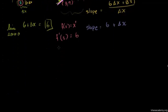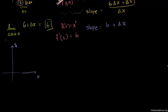So let me redraw my function here — never hurts to have a nice drawing. So that is my y-axis, that is my x-axis. Let me draw my curve — it looks something like that. You've seen that multiple times. This is y is equal to x squared.